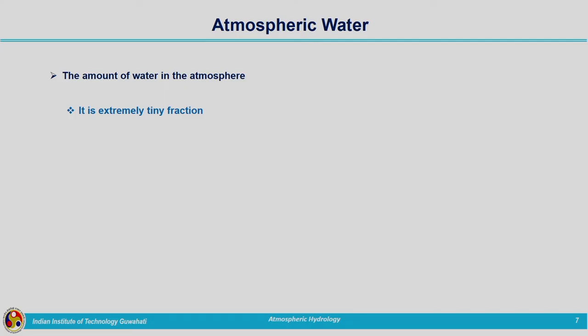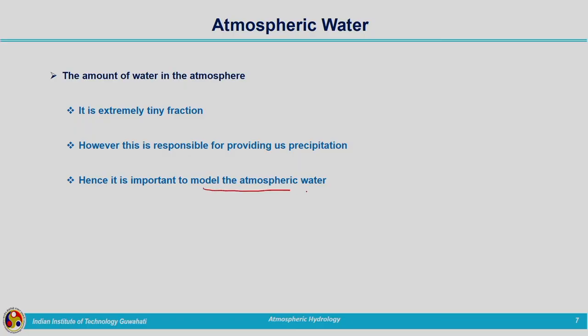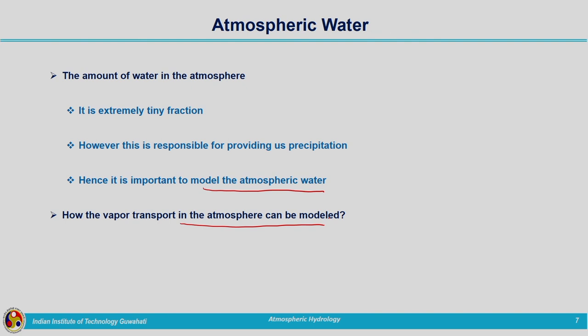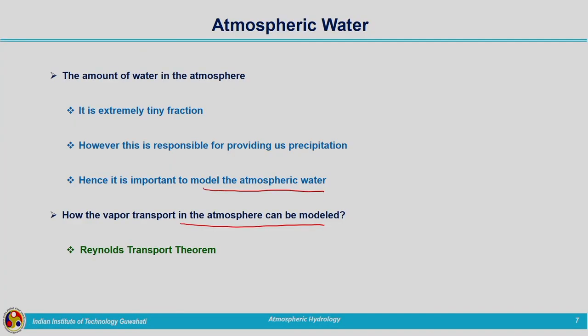We need to understand the amount of water present in the atmosphere. We know it is a very small fraction, but this small fraction is responsible for the precipitation we experience. So we need to model the atmospheric water to study the movement of this water vapour. After modelling, we can understand different processes clearly. For water vapour transport modelling in the atmosphere, we use the Reynolds Transport Theorem developed in previous lectures.